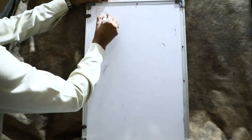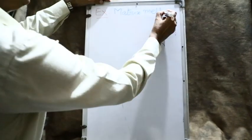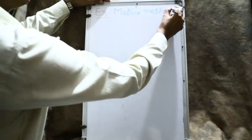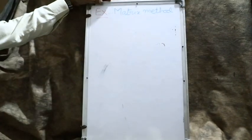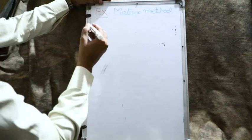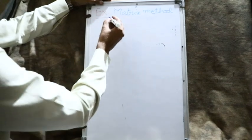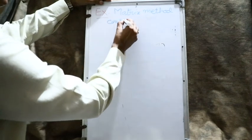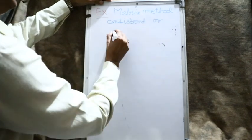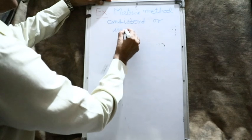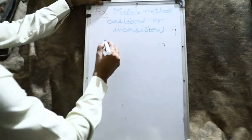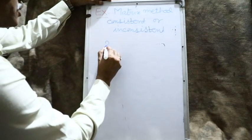The next example: use the matrix method to examine whether the given system of linear equations is consistent or inconsistent.